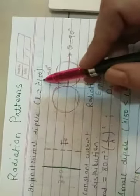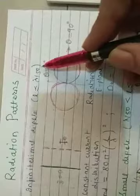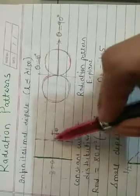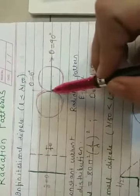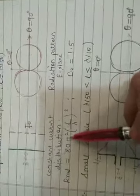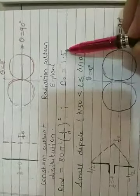So the infinitesimal dipole has a very small length compared to the operating wavelength — its length is less than or equal to lambda by 50. Since the length is very small compared to wavelength, current distribution along this dipole can be assumed to be constant along the length, with no variation. Its radiation pattern in the Y-Z plane or E plane is like a horizontal figure-8 shape. The dipole is placed along the Z axis. Radiation resistance is given by 80 pi squared times (L/lambda) squared, and directivity is 1.5.